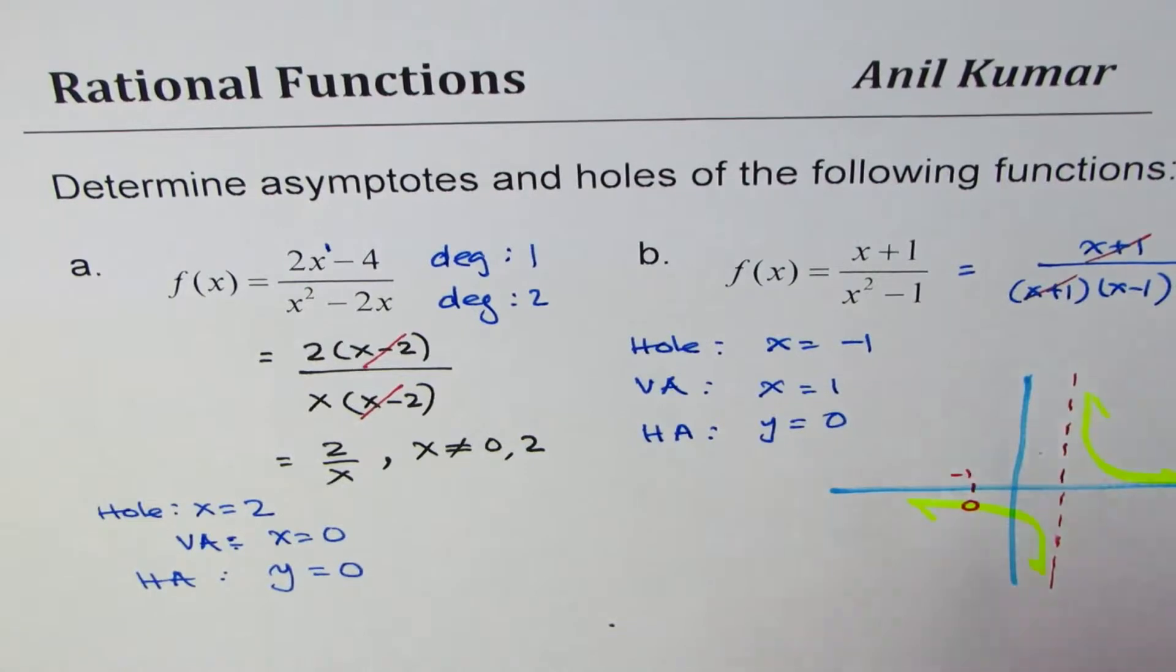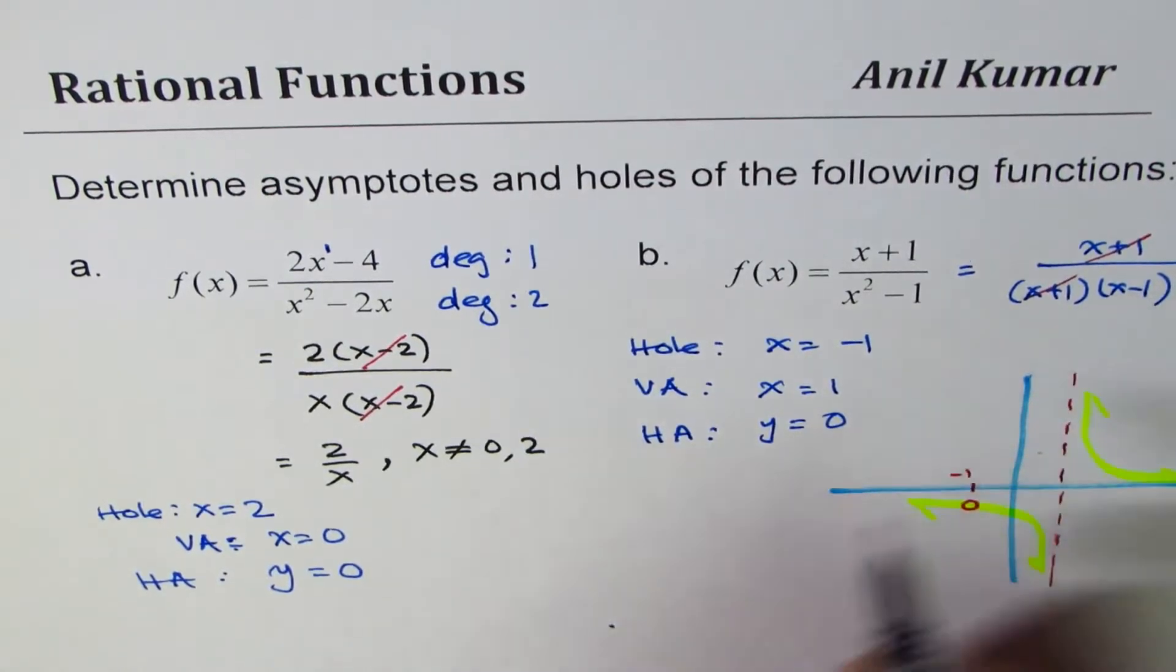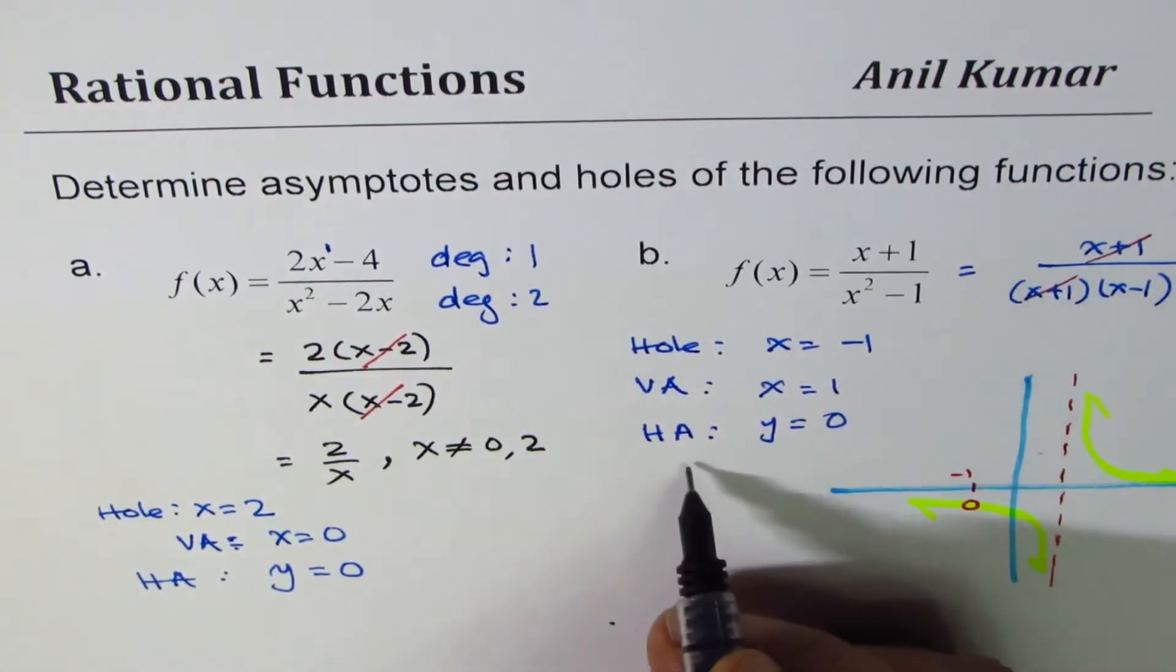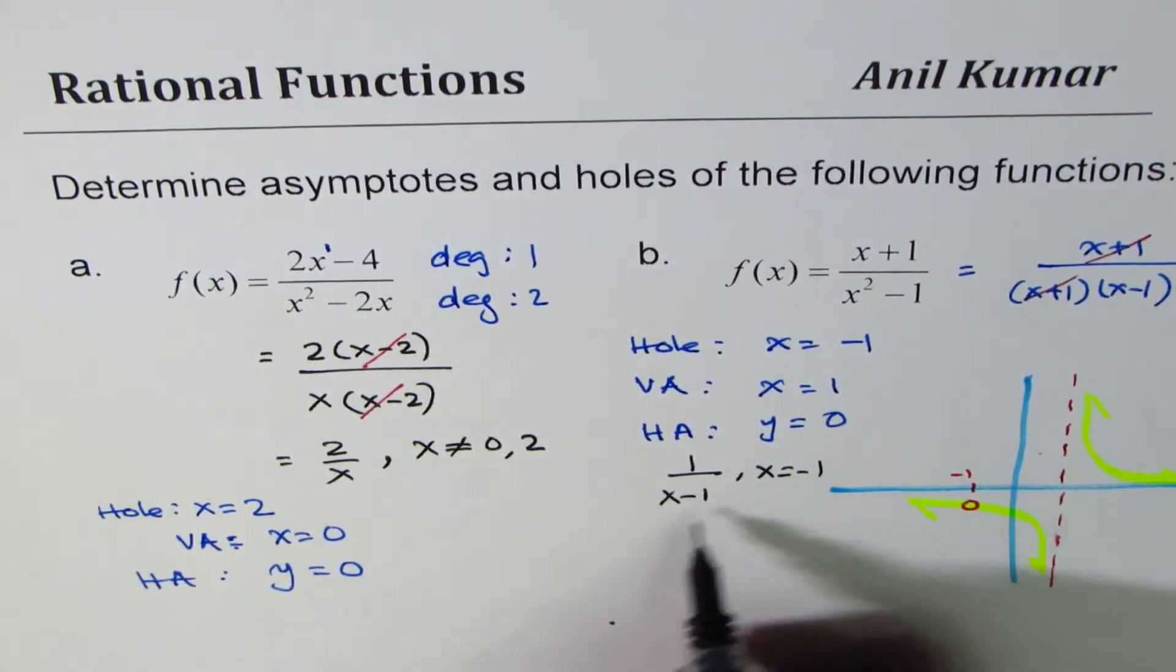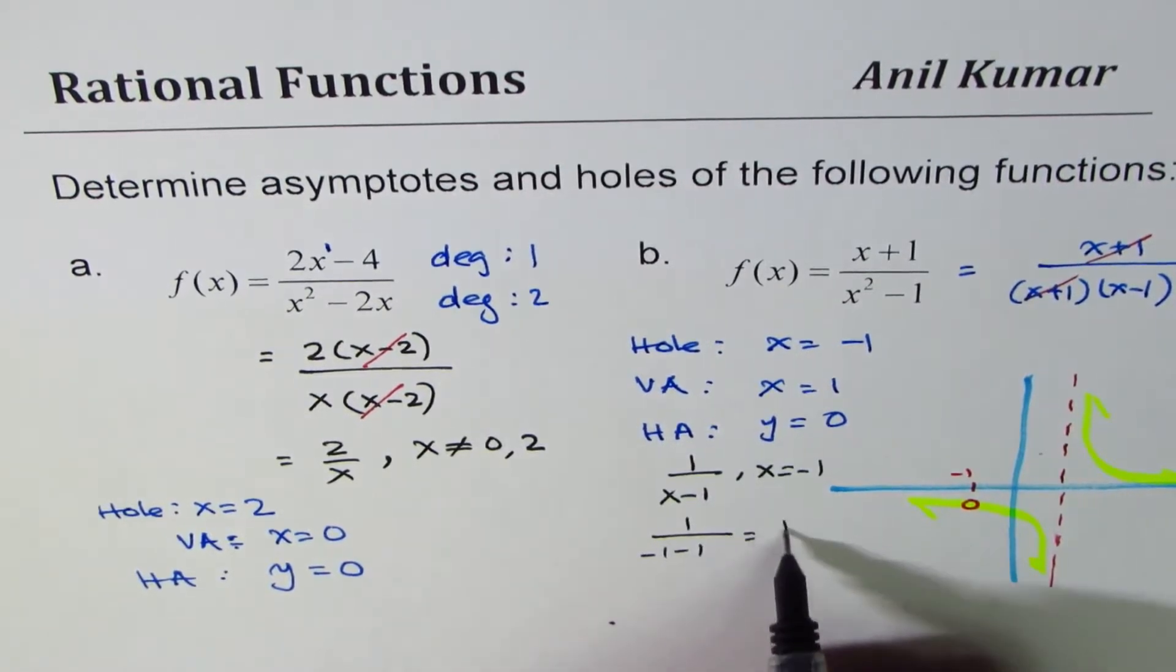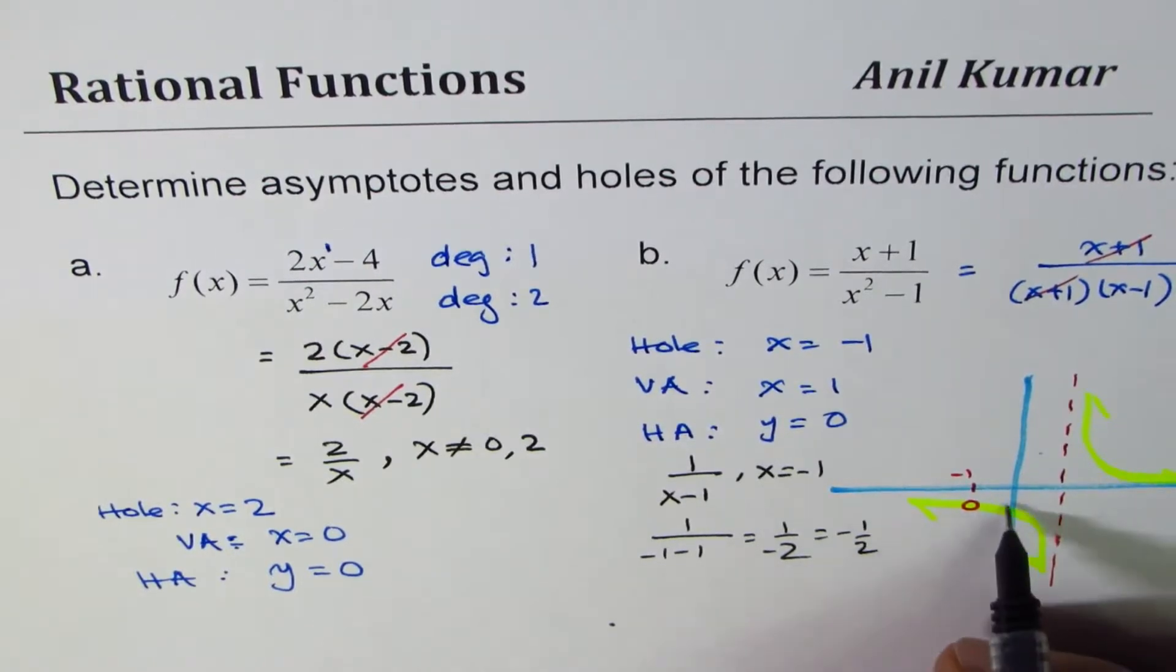What we should do is substitute minus 1 here. So if I substitute in 1 over x minus 1, if I write x equals minus 1 here, what do I get? I get minus 1 minus 1, which is 1 over minus 2, or minus half. So this is y value of minus half.